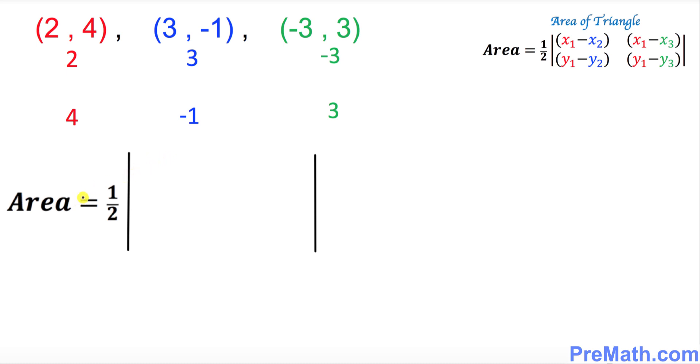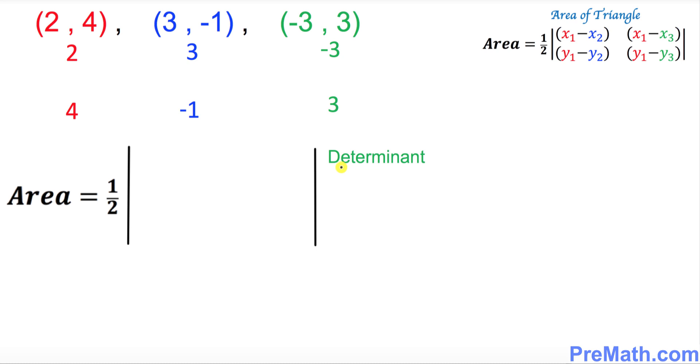Now we're going to find the area of the triangle by filling out this box. By the way, these two vertical lines—this box is closely related to a matrix and we call this one a determinant.